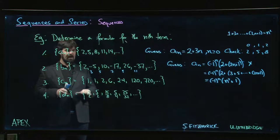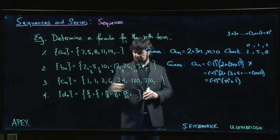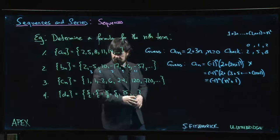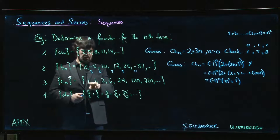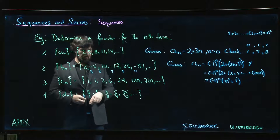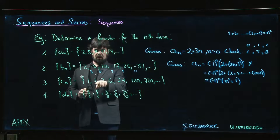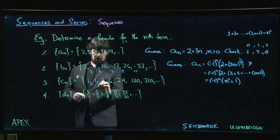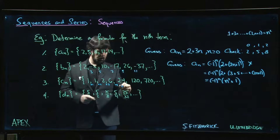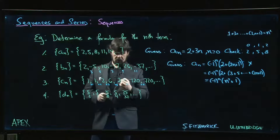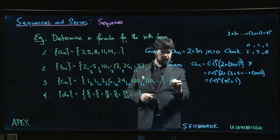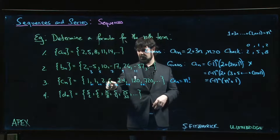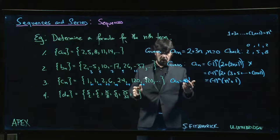The next sequence I can spot right away: 1, 1, 2, 6, 24, 120, 720. How do these numbers compare? 2 is twice 1, 6 is 3 times 2, 24 is 4 times 6, then times 5 gives 120, times 6 gives 720. This is simply the sequence of factorials: 0!, 1!, 2!, 3!, 4!, 5!, 6!.